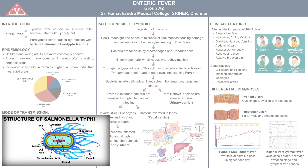Salmonella typhi is a gram-negative bacillus which is highly motile thanks to its peritrichous flagella. It exhibits a characteristic swarming motility due to the presence of rotating flagella. Salmonella has three important antigens useful for lab detection: flagella antigen H, somatic antigen O in the cell wall, and surface antigen Vi which is the virulence factor.